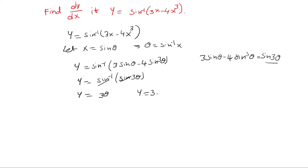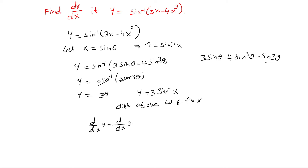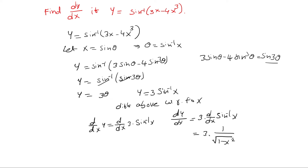Now y is equal to 3 into theta, and theta is sin inverse x. So y equal to 3 sin inverse x. Differentiating with respect to x, dy by dx is equal to 3 into 1 by root of 1 minus x square, which gives 3 by root of 1 minus x square.